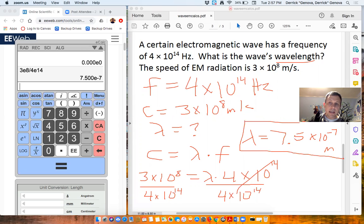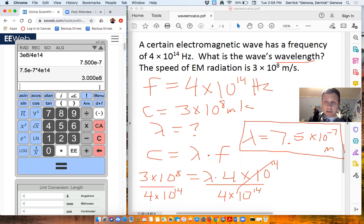And again, just taking that extra second to check. If I do lambda times f, I should get the speed of light. So lambda, which I just calculated as 7.5 e to the negative 7. If I multiply that by my frequency, 4 e 14, I should get 3 times 10 to the 8th. And I do. So that's a final check you can do just to make sure you've done it right.